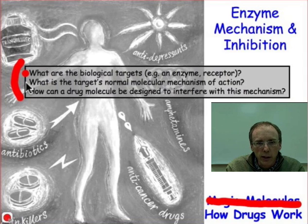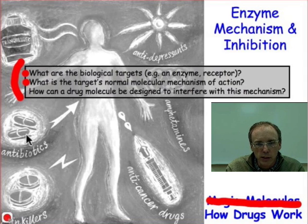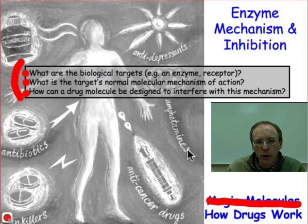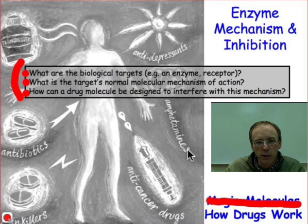Once we know those targets, we need to think about what are the normal molecular mechanisms by which these targets carry out their action. And then we can think about how to do the molecular engineering side of the problem — that is, how to design a drug that could interfere with this mechanism. So as you think about what's going to be coming down the next few webcasts, these are the questions I want you to think about: What's the target? What's the mechanism? And how can we interfere with that mechanism?